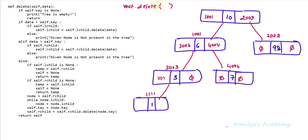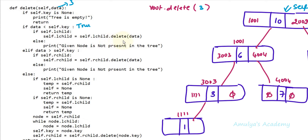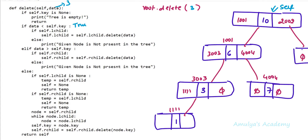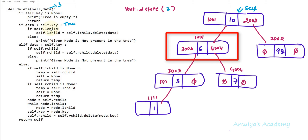Next let's delete a node which contains one child node — that is node 3. Here data is 3 and self is the root. It checks self.key is None — no. It checks if data is less than self.key: data is 3, self.key is 10, so this condition is true. It checks if self.lchild is present — yes — so it calls self.lchild = self.lchild.delete(data), recursively applying delete to the left subtree.